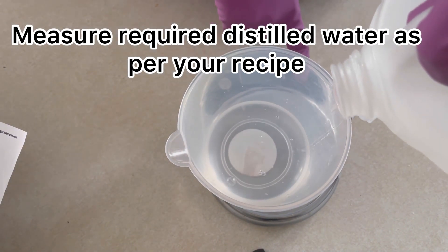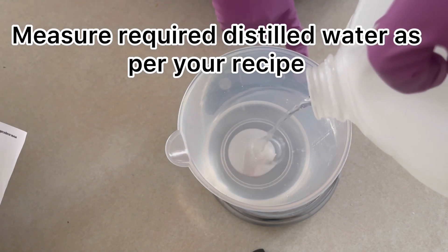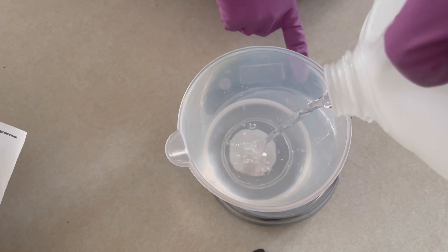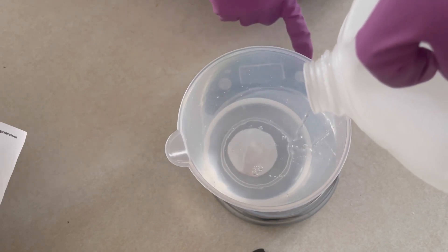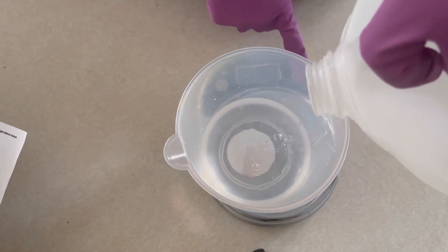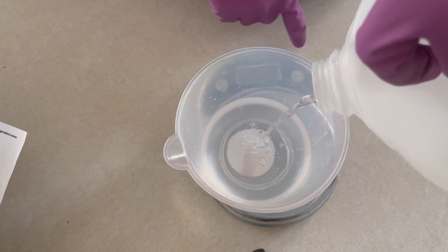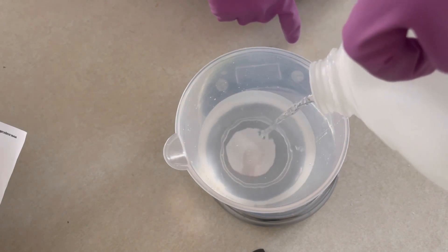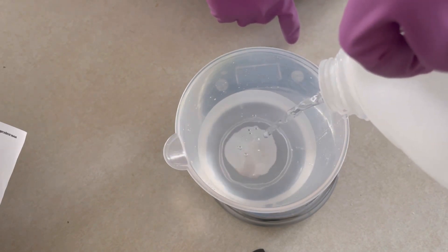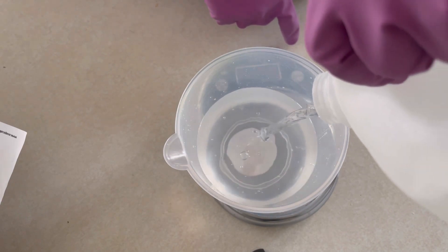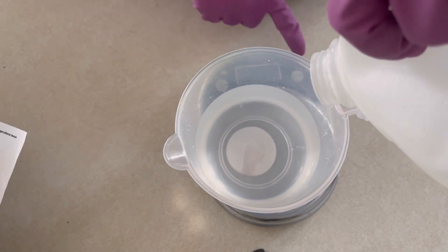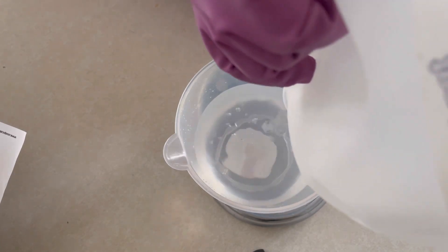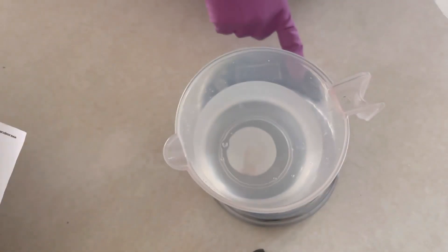Potassium hydroxide attracts moisture, so be sure to keep it in a sealed container in a cool, dry place. When handling potassium hydroxide, give it the same safety consideration as you would with sodium hydroxide. Being educated about safe handling practices is key. I'm also linking the sodium hydroxide handling video in the description box below. Go through it for a safety refresher.